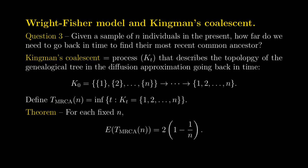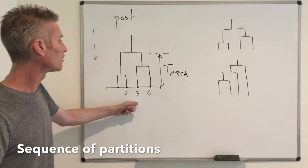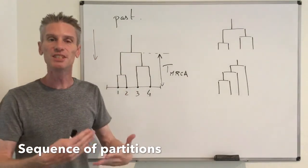More formally, Kingman's coalescence is the process K_t — K for Kingman — evolving in continuous time. Even though the Wright-Fisher model is discrete time, because we look at genealogy in the diffusion approximation, K_t is a continuous-time Markov chain. The process is defined on the set of partitions of {1, 2, …, n} representing the n individuals. The initial state is the partition with n singletons {1}, {2}, …, {n}, and the final state is the single set {1, 2, …, n}.